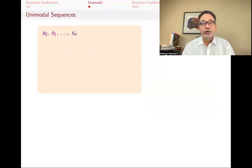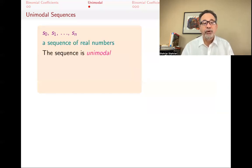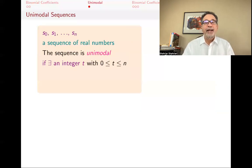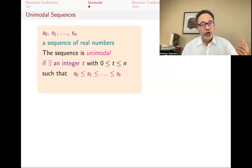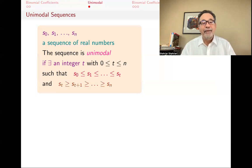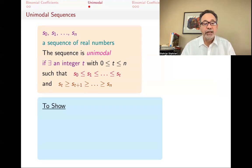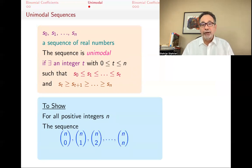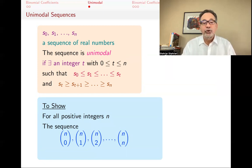So let me formally define what a unimodal sequence is. If you have a sequence of numbers s₀ to sₙ — a sequence of real numbers — we say the sequence is unimodal if there's an integer t such that the sequence increases from s₀ up to s_t and then decreases. We allow ties at any point. What we want to show is that for all positive integers n, the sequence of binomial coefficients in one row of the triangle — n choose 0, n choose 1, ..., n choose n — is unimodal.